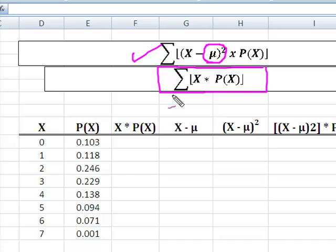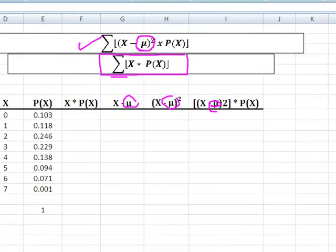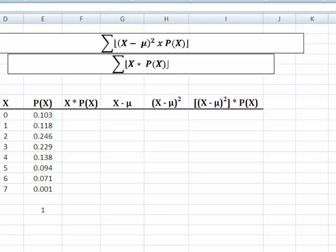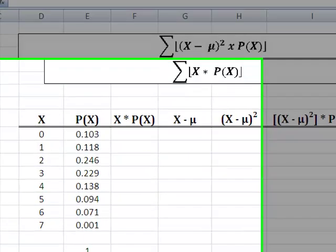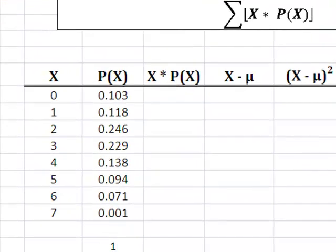So, X, the sum, remember, sum, X times the probability of X is going to give me the mean of the distribution. And I've got to have the mean because I've got to use it here, here, and here. So the formula for the mean of a probability distribution is simply X times the probability of X.